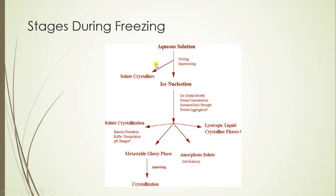At this stage, some solutes get crystallized. The next step is ice nucleation. After supercooling, as cooling continues, nucleation of ice is initiated, causing crystallization of ice. As ice crystallizes, the solute becomes concentrated because water is removed, leading to an increase in ionic strength. This leads to solute crystallization and eutectic formation. Some solutes do not crystallize and remain in an amorphous state, some convert into a metastable glassy phase, and some remain in a lyotropic liquid crystal state.